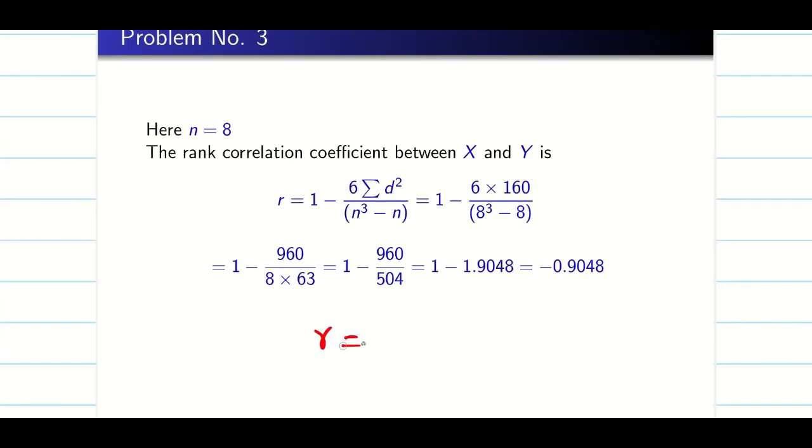Since r is going to be -0.9048, I can say X and Y are negatively correlated. Also, the correlation is very high in the sense of negative. They travel in the opposite direction.